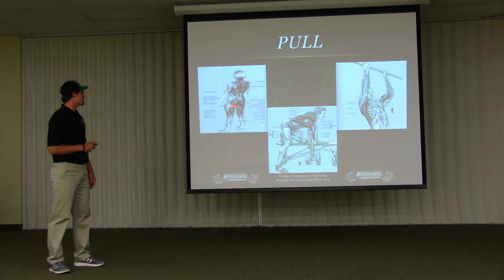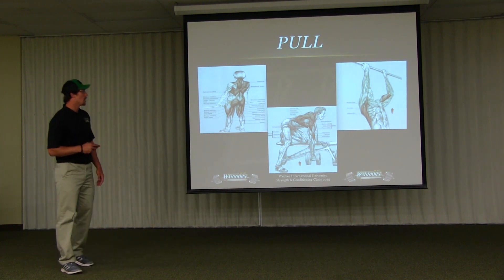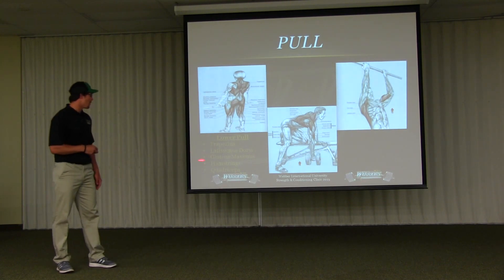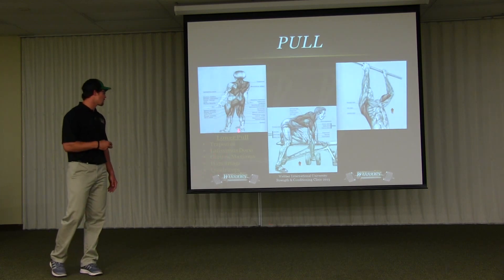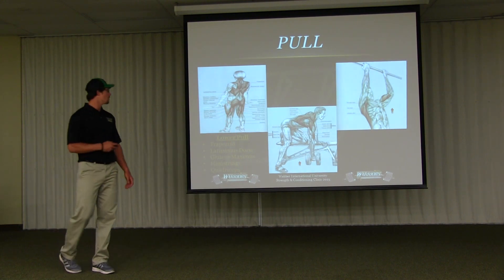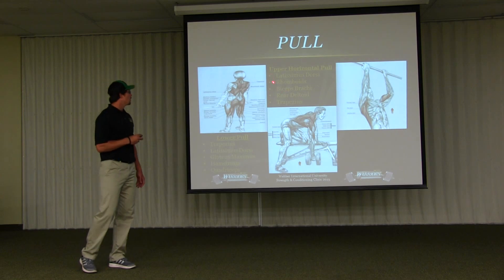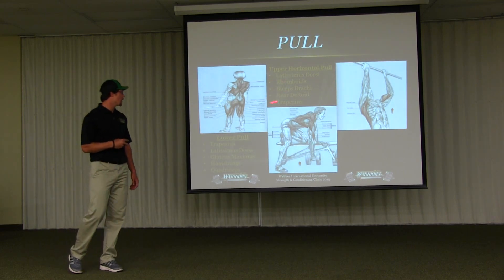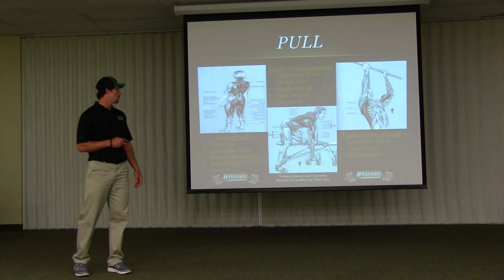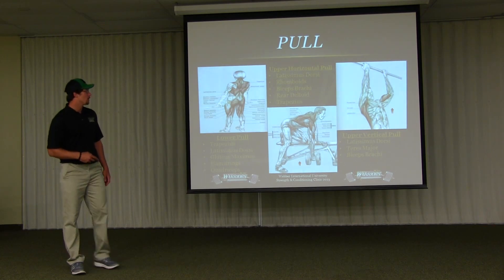For pulling exercises: the lower pull is the top side of a deadlift, working the traps for stabilization, lats for engaging the back, glute max, hamstrings, and quads on the lower half to stand the body up — more of a total body, top to bottom, bang-for-your-buck exercise. The upper horizontal pull is a dumbbell bent-over row working lats, rhomboids, biceps, rear delt, and traps — hitting just about everything on the backside. Finally, the upper vertical pull works the lats, teres major, and biceps brachii.